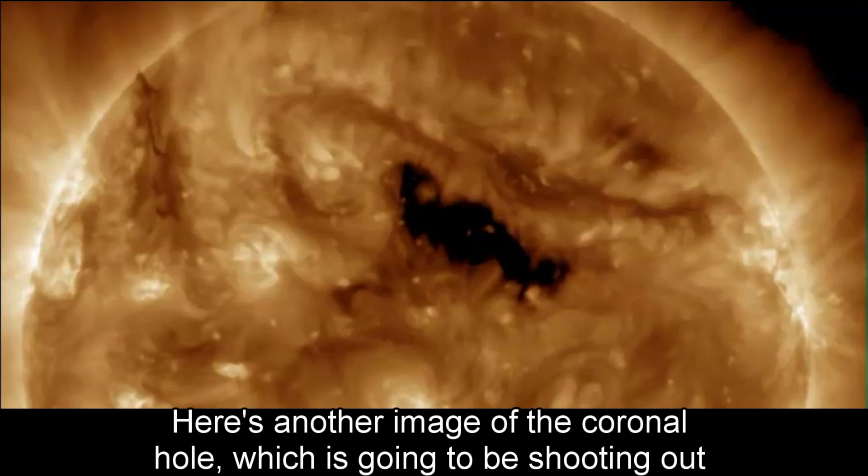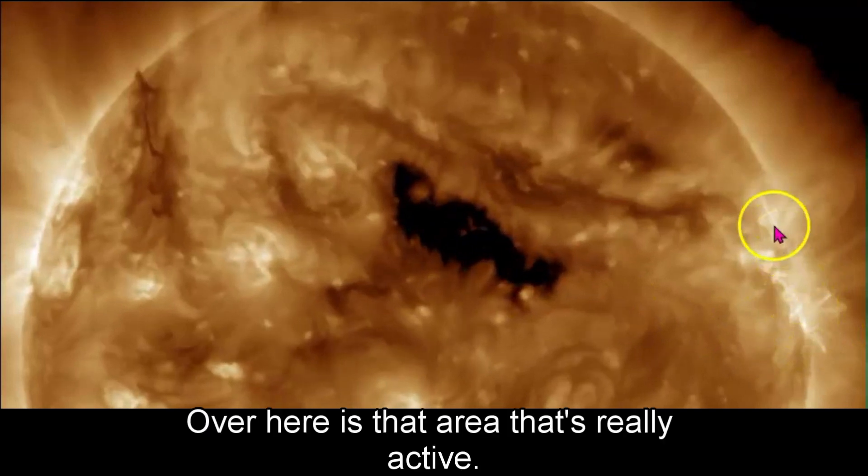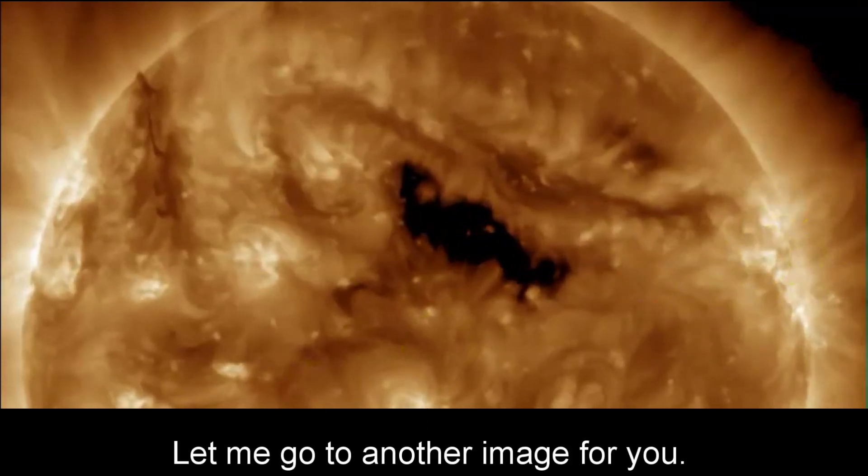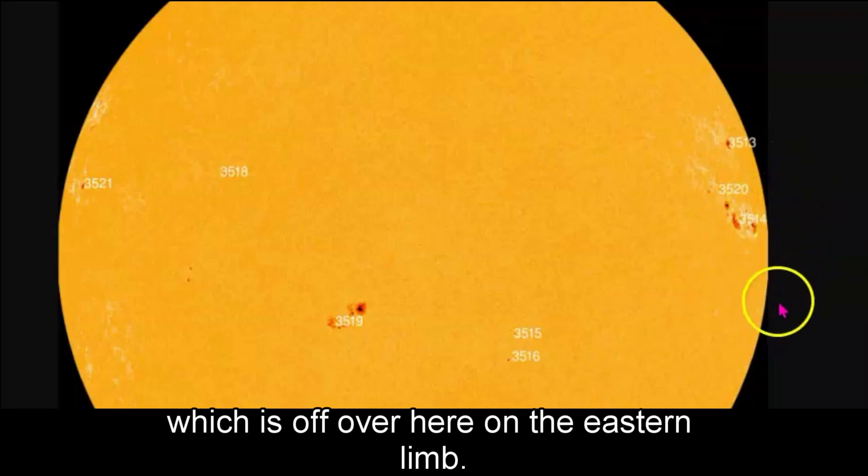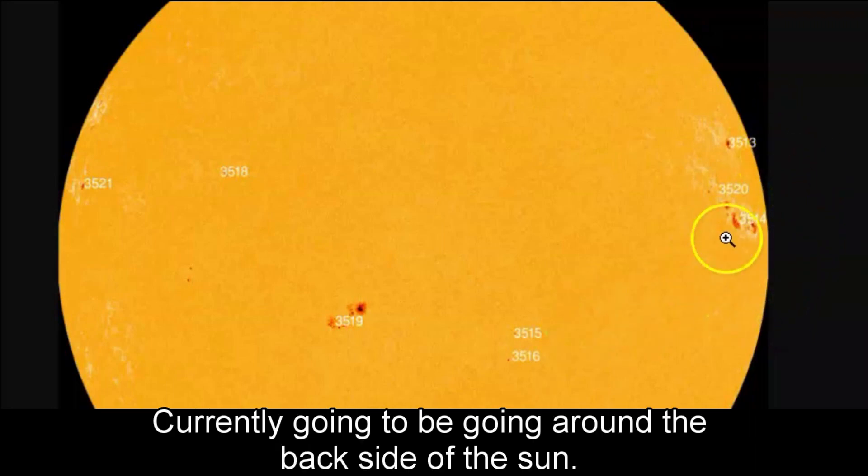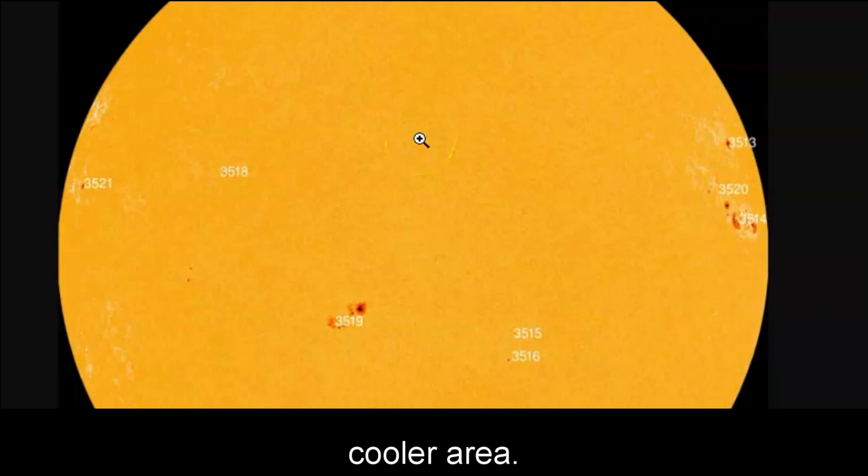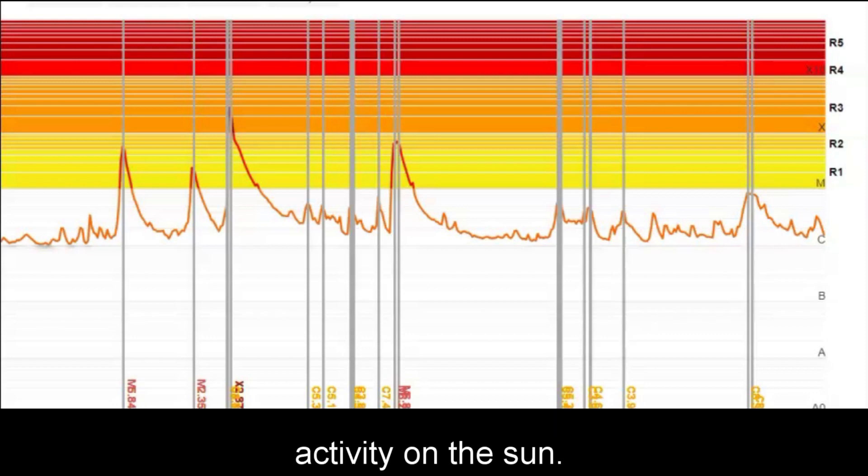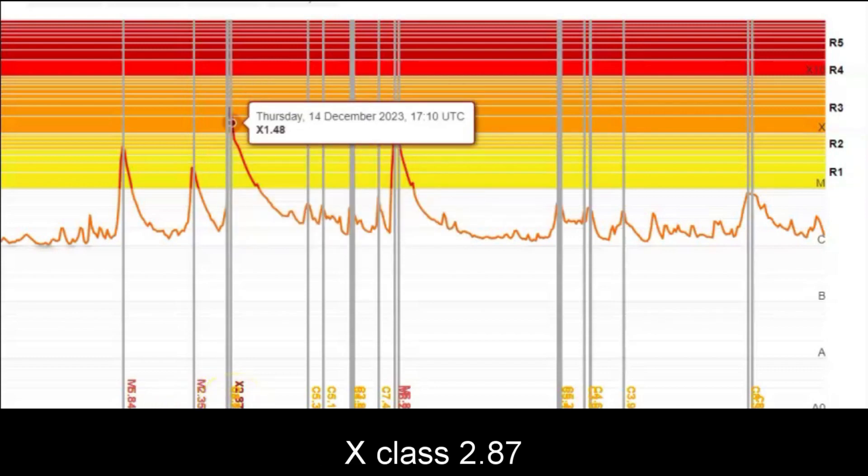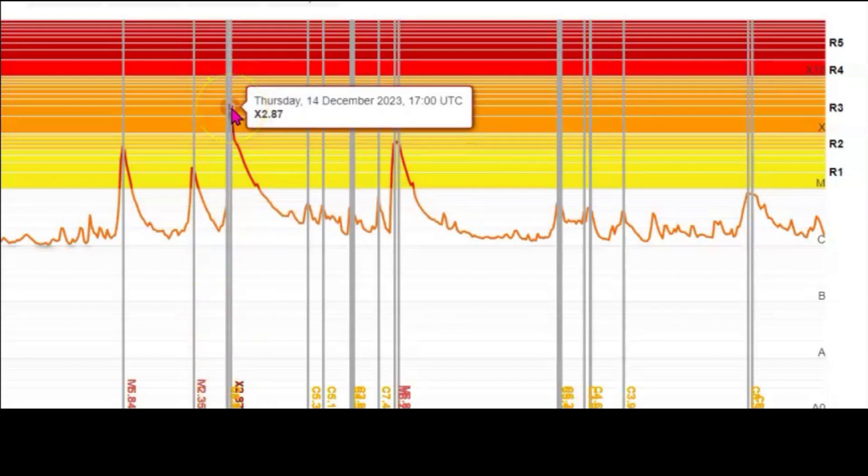Here's another image of the coronal hole, which is going to be shooting out all the winds towards the Earth. Over here is that area that's really active. Let me go to another image for you. All this came from Sunspot 3514, which is off over here on the eastern limb currently going to be going around the backside of the Sun. Up over here would be that cooler area. We're going into a solar maximum, which means more sunspots, more activity on the Sun. Right here was that X2.87 that occurred. Let me bring it up over here. You can see it, X2.87.